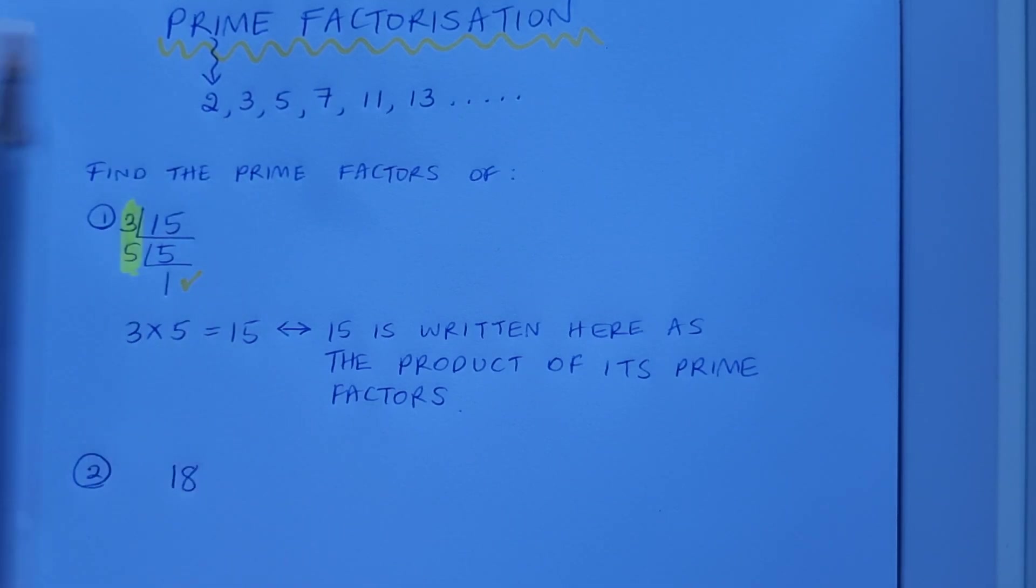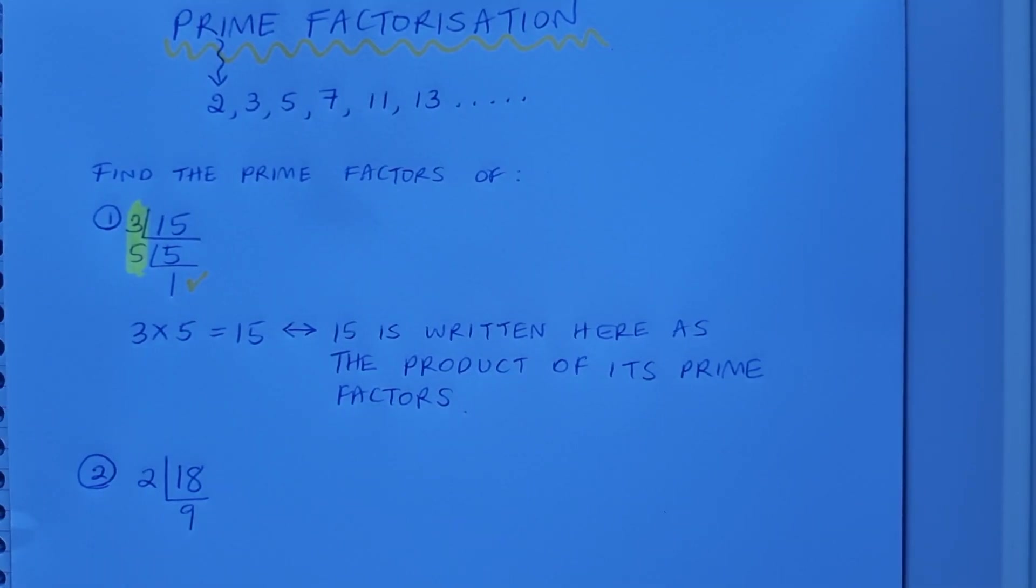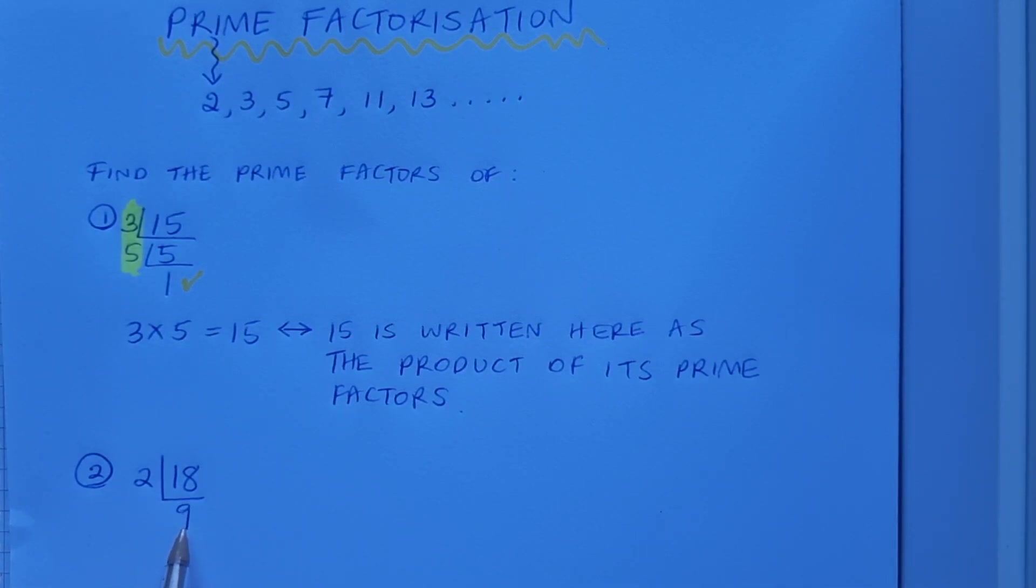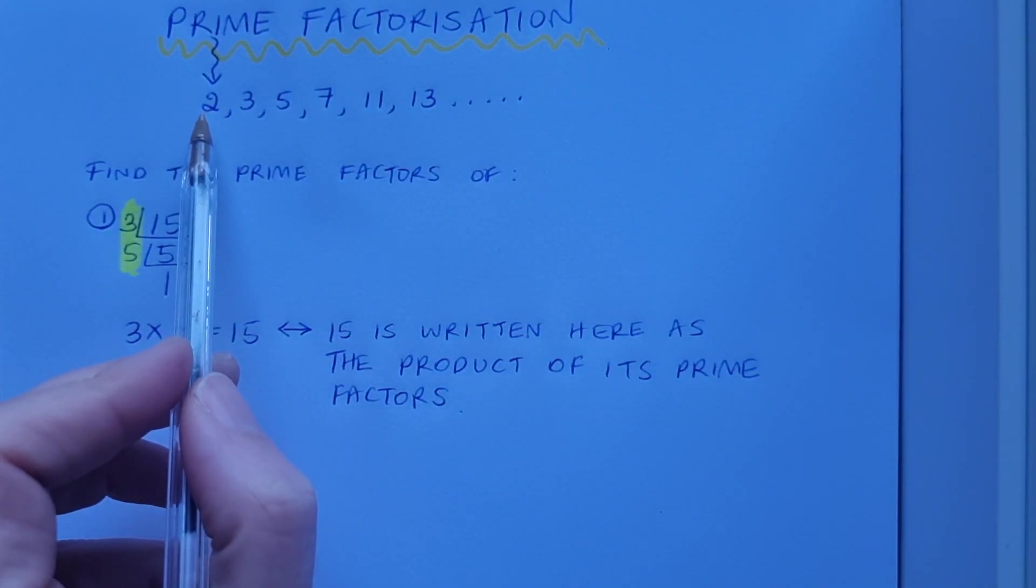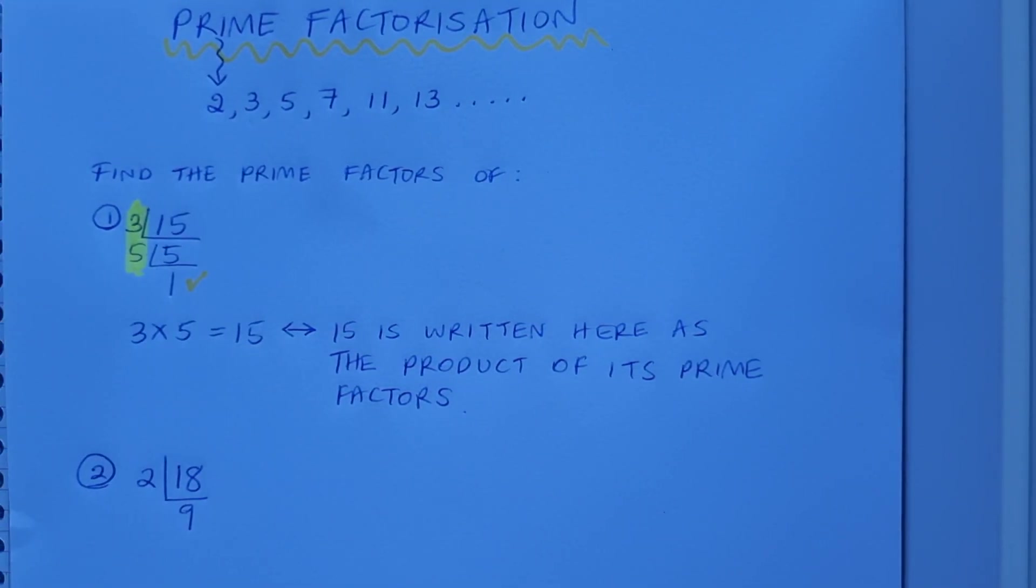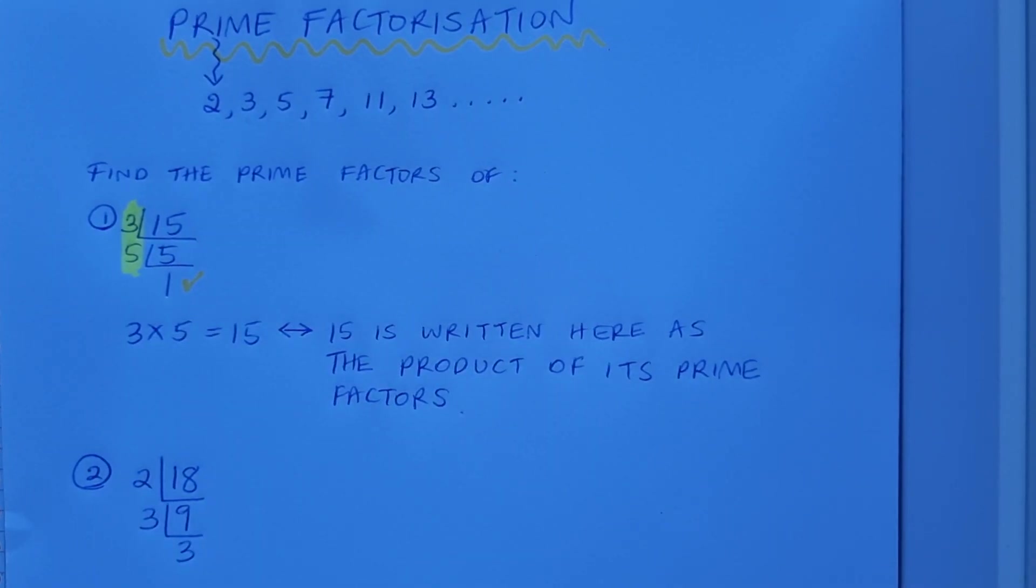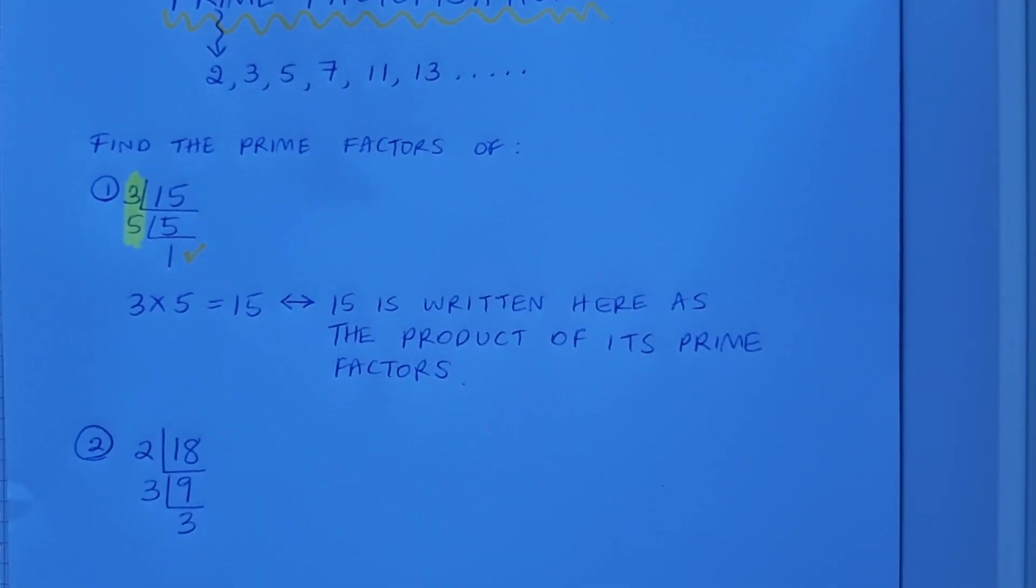I'll start, 2 will definitely go into it. So 2 into 18 goes 9, and I can definitely go again because I've got factors for 9. I can't use 2 again but I can use 3 this time. 3 into 9 will go 3 times. I'm not quite there yet because I haven't got down as far as my 1 at the end.